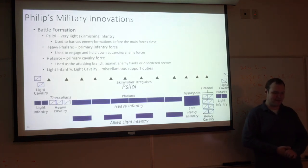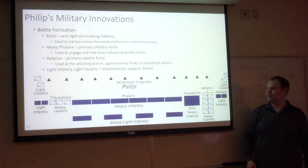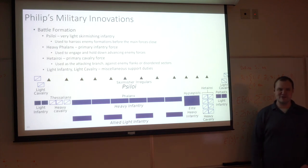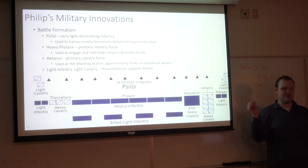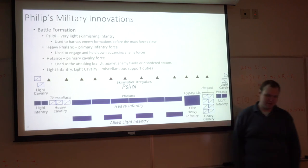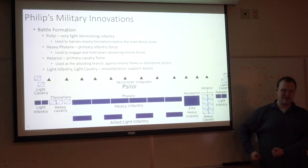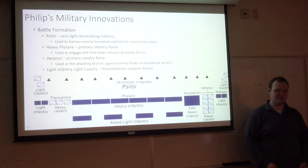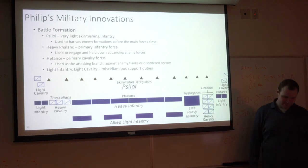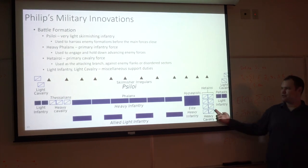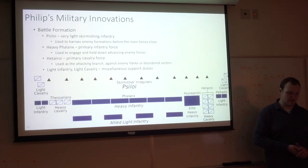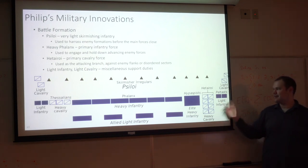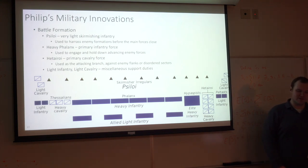The entire battle formation that Philip had was structured as follows: at the very front were the psiloi — irregular troops with very light equipment, supposed to skirmish before battle and throw javelins or rocks to break up the enemy formation. The heavy phalanx in the middle was the primary infantry force, supposed to engage and hold the enemy where Philip wanted. The companion cavalry was typically on the right, used to attack enemy flanks, disorder sectors, and basically chop the army up into pieces. Finally, miscellaneous light infantry and light cavalry from allied cities provided local support where needed during the battle.